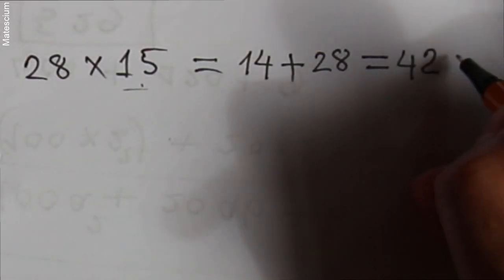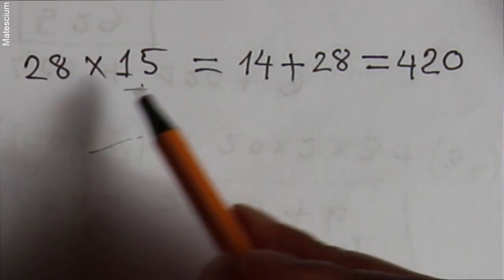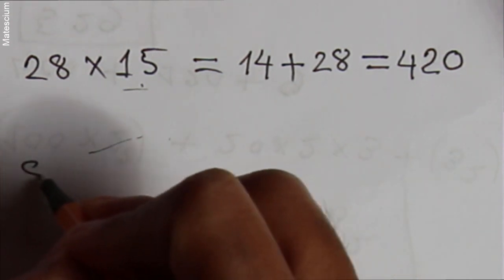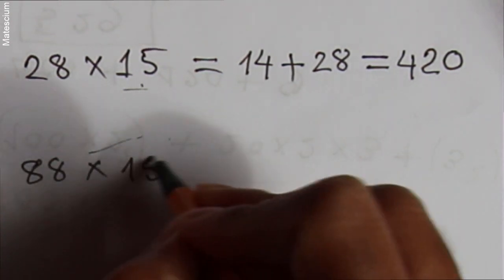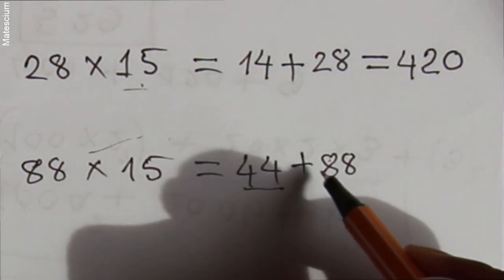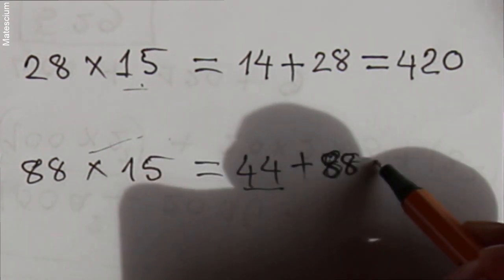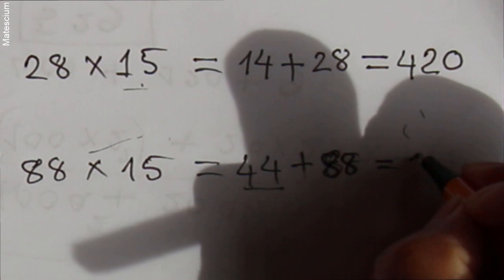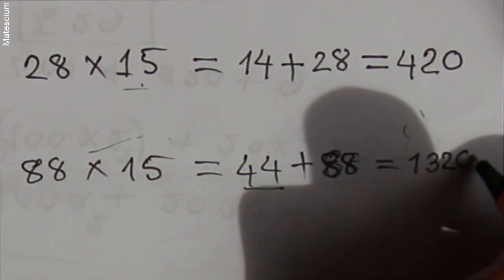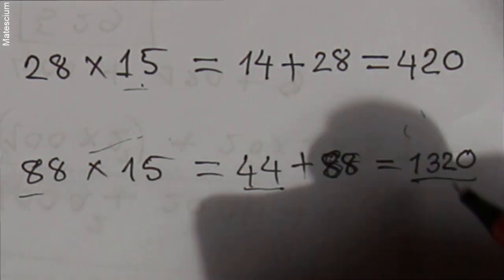Similarly, you have to write an additional zero here. This is the case you apply for any number multiplied by 15. Let's do another example: 88 times 15. Consider half of 88, which is 44, and add this number with its half — 44 plus 88 equals 132. Write an additional 0 here. This is the answer of 88 times 15.